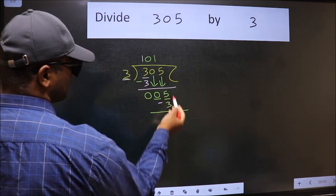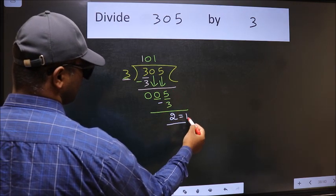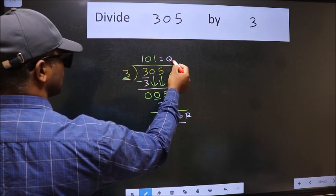We don't have any more numbers to bring it down, so this is where we stop. This is our remainder and this is our quotient.